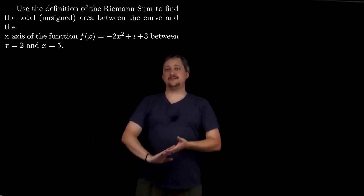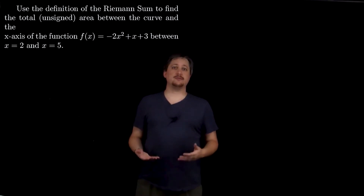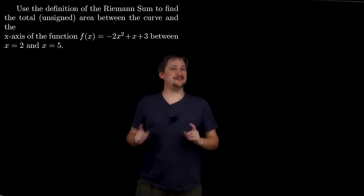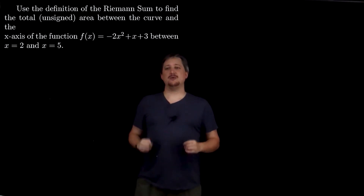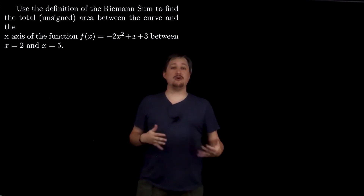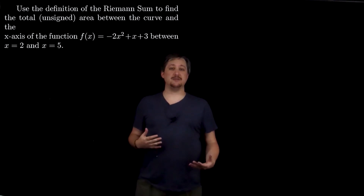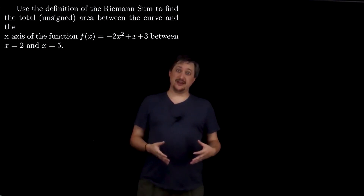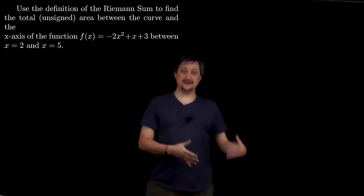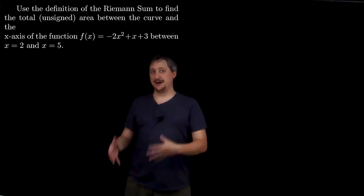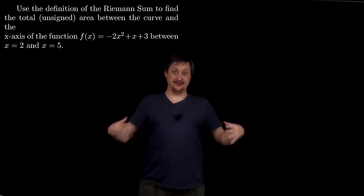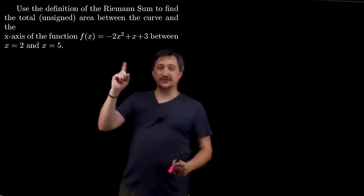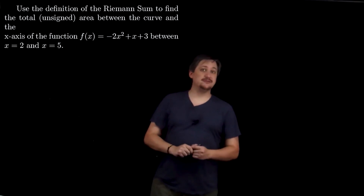In this example, we are going to use a Riemann approximation to get the exact unsigned area. This is tricky because it wants to count all area as positive. In particular, if there are places where the function is negative, we have to find those and calculate the area for that independently of the places where it's positive, so that we can add the two magnitudes together. So the first thing I'm going to do is figure out where this function is positive and negative.